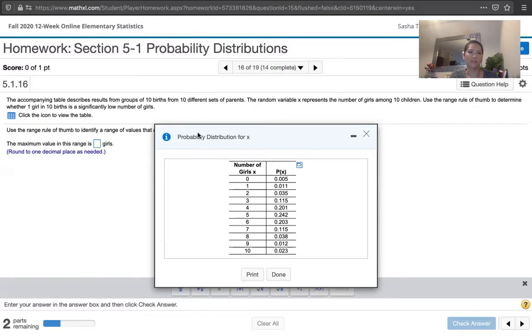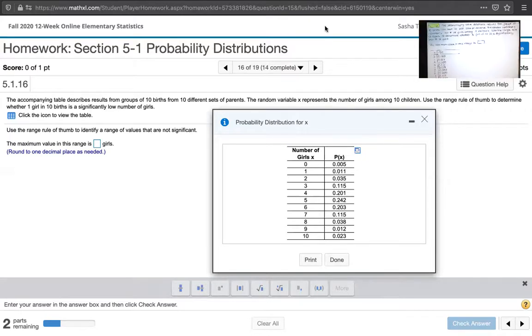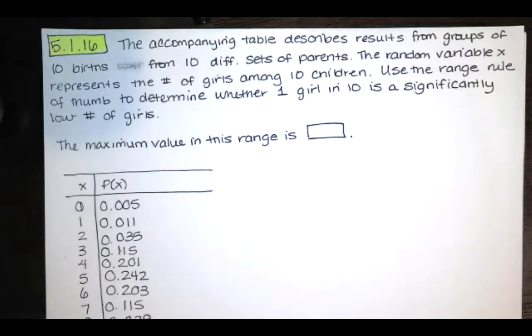Now when we want the maximum value in that range of values that are not significant, what you want to find is the mean plus two standard deviations. So in order to find that maximum value you need to find the mean, then you need to find the standard deviation, and then you need to compute the mean plus two standard deviations. So let's do that. In order to do that I will share my paper with you.